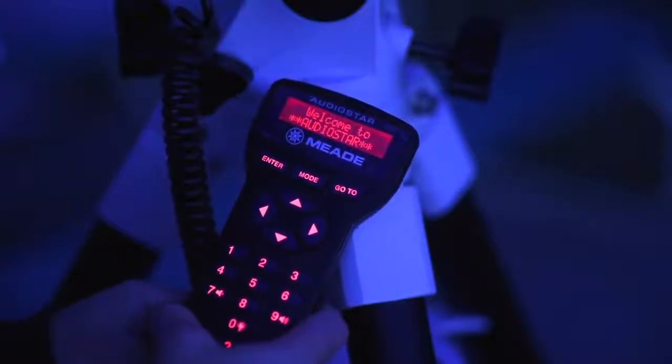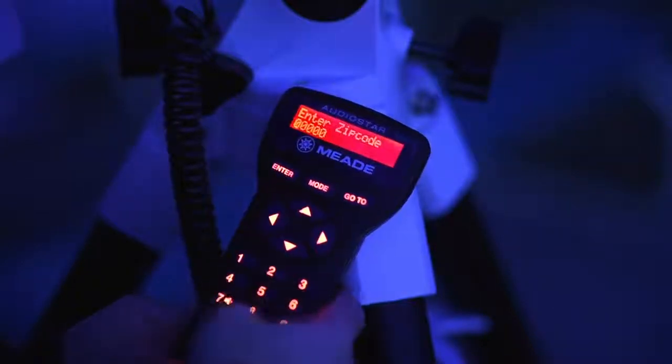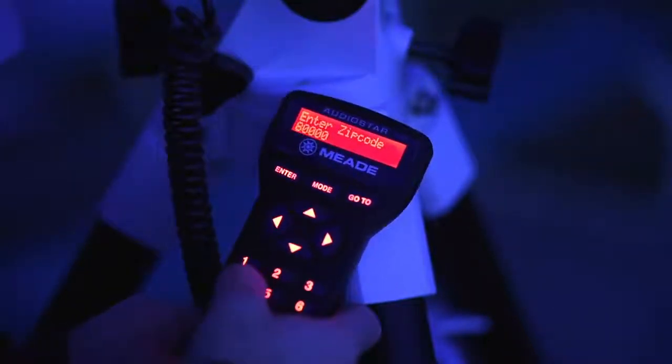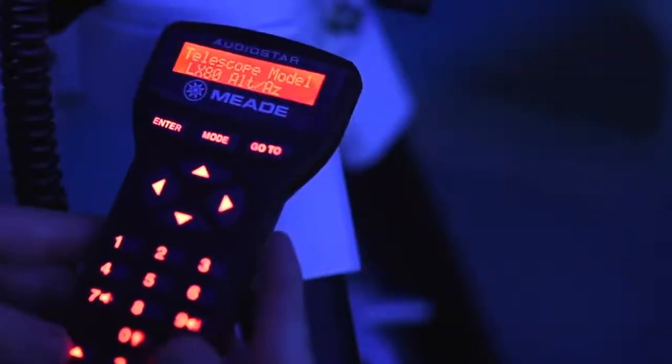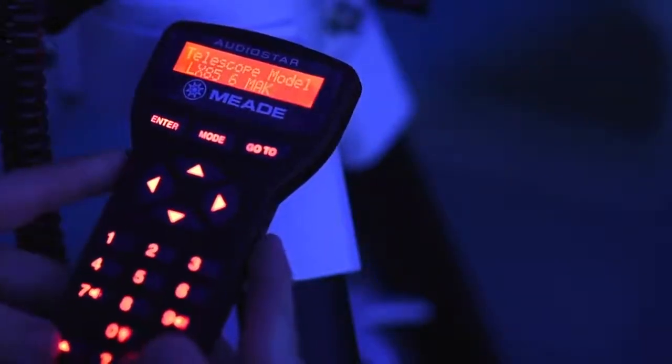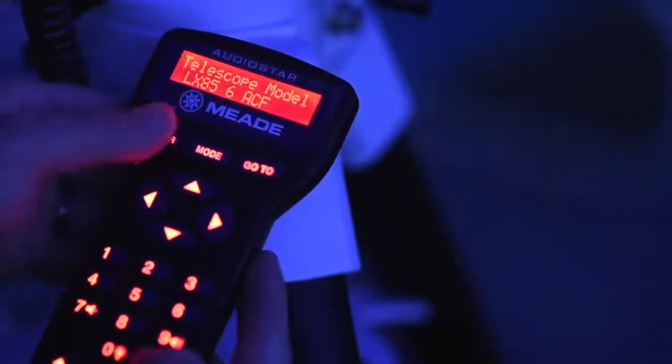AudioStar will take a few moments to start up the system. Press 0 to align your telescope using the easy align method. Set your location or zip code. The next screen requests the status of daylight savings time. If active, press 1 and if not active, press 2. AudioStar then asks for the telescope model that you are using. Using the scroll keys, locate the model of your telescope and press enter.